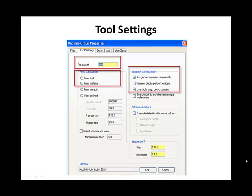Select the Tool Settings tab. Enter a Program Number. Establish Feed Calculation from Tool or from Material. Assign Tool Number sequentially, and use tools Step, Peck, and Coolant.